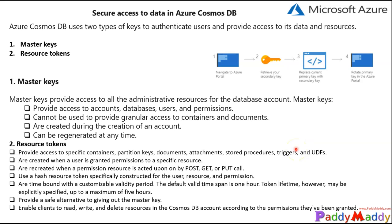When you want to provide access to resources within your Cosmos DB account to a client that cannot be trusted with the master key, resource tokens provide a safe alternative that enables clients to read, write, and delete resources in your Cosmos DB account according to the permissions you have granted, without needing either a master key or a read-only key.